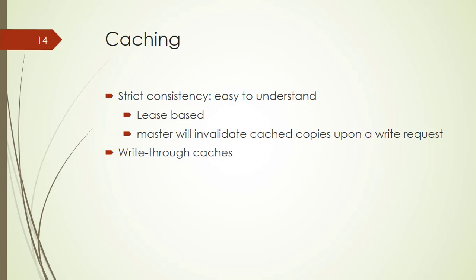The caching protocol is simple: it invalidates cache data on a change and never updates it, because it is lease-based and the master will invalidate cache copies upon a write request. It is also a write-through cache. Chubby clients cache open handles, so if a client opens a file it has opened previously, only the first open call necessarily leads to an RPC to the master. Caching is restricted in a minor way so it never affects the semantics observed by the client. The last restriction is about the close call or poison call for the side effect of cancelling outstanding calls to the master.